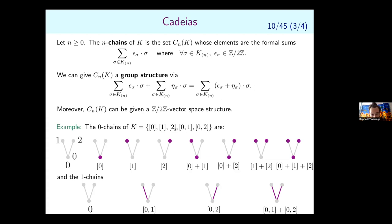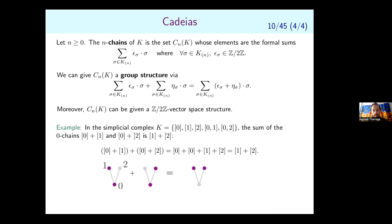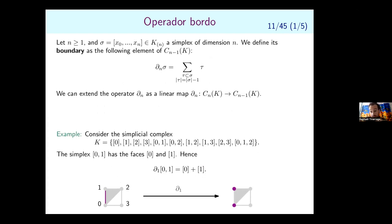For example, in a simplicial complex with three vertices and two edges: the 0-chains are sums of vertices such as {0}, {1}, {0,1,2}, and so on. The sum of the chain {0,1} and the chain {0,2} equals {1,2}, because vertex 0 appears twice and one plus one equals zero in Z/2Z, so it cancels.